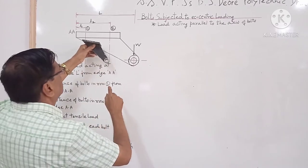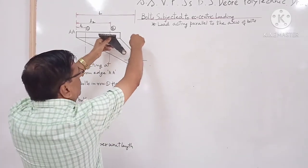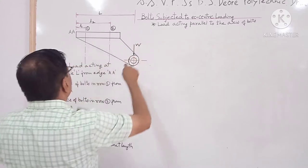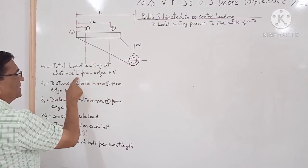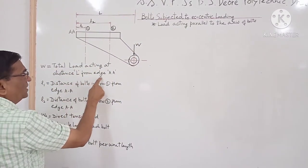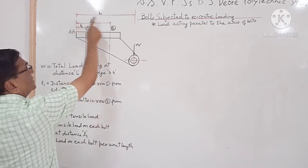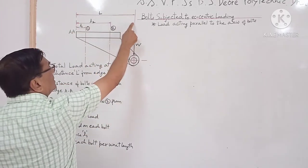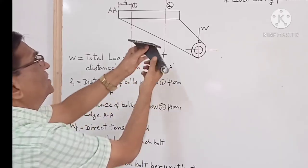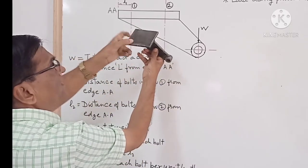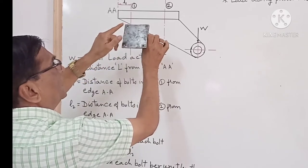Now we will design the bolts. W is the total load acting at a distance L from the edge AA. This is viewed from the top, and this is the edge AA.